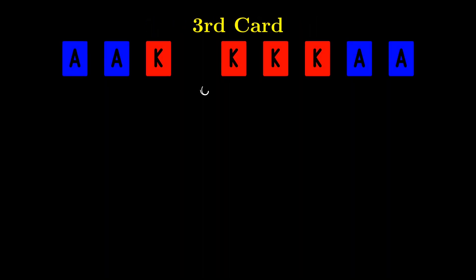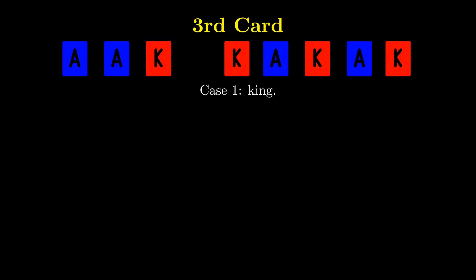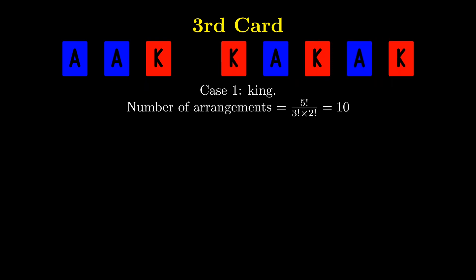Now for the third card, if we have a king, we can stop dealing. The total number of arrangements is 5 factorial divided by 3 factorial times 2 factorial, which gives us 10.